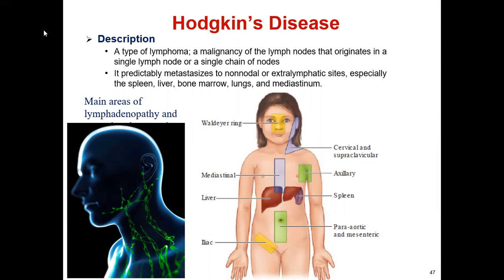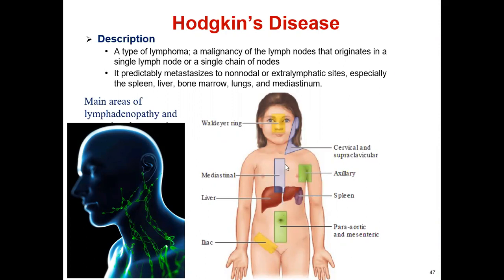Hodgkin disease is a malignancy of the lymph node that originates in a single lymph node or single chain of nodes. It predictably metastasizes to non-nodal or extra-lymphatic sites, especially the spleen, liver, bone marrow, lungs, and mediastinum. Lymph node locations include the axilla, para-aortic, mesenteric, inguinal, mediastinal, and cervical or supraclavicular lymph nodes.